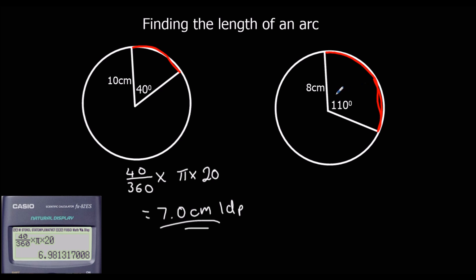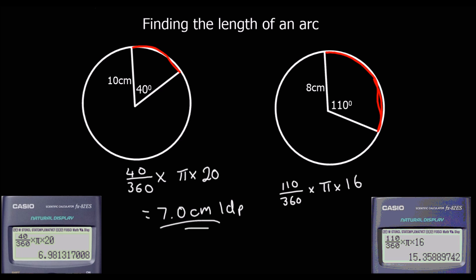In this case, we've got 110 degrees. Again, out of a full circle, times pi times the diameter — which is double the radius, so 16. Type that into the calculator and it gives 15.4 centimetres to one decimal place.